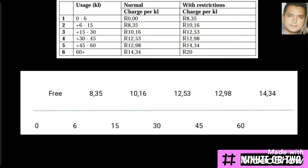I will answer using both methods and you can see which one works best for you. In the number line method, I've drawn the number line with the different intervals from 0 to 6 and so on. I've taken the normal charges from the middle column of the table and placed them above the number line to show at which interval those charges apply. For instance, from 0 to 6 it's free, and from 6 to 15 the rate is R8.35.